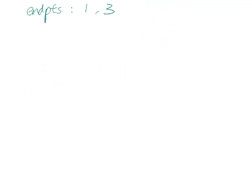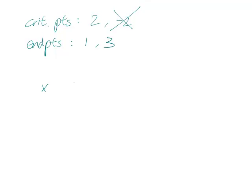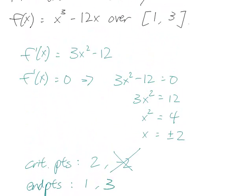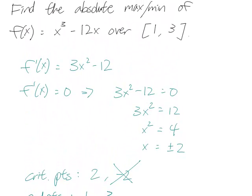That means when we make our little table of x and f(x) values, we're just looking at 1, 2, and 3. And now let's plug these into f(x). Remember not to plug them back in f prime, but we're comparing only y values, so we do it in f.